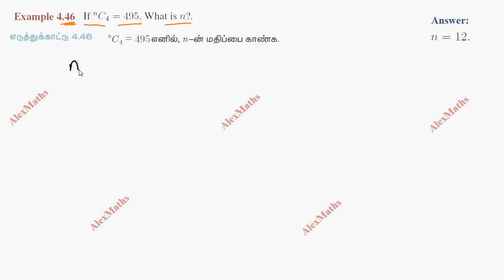Now, nCr is the expansion formula: n factorial divided by n minus r factorial into r factorial.